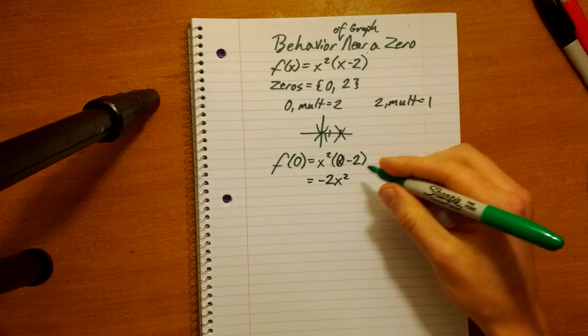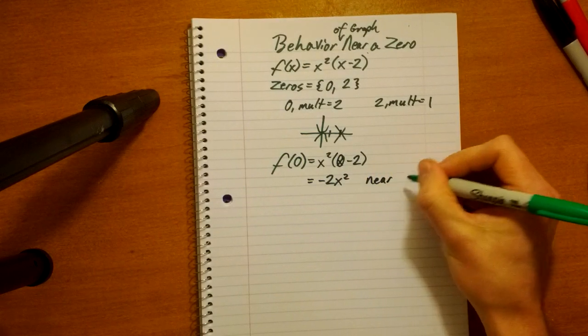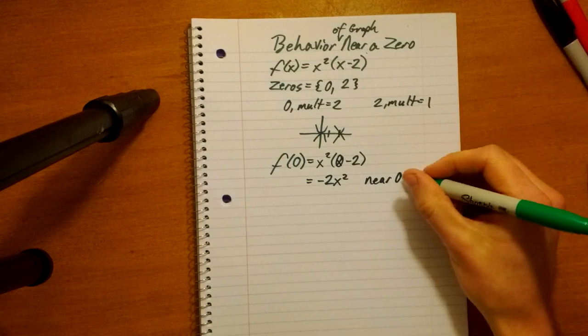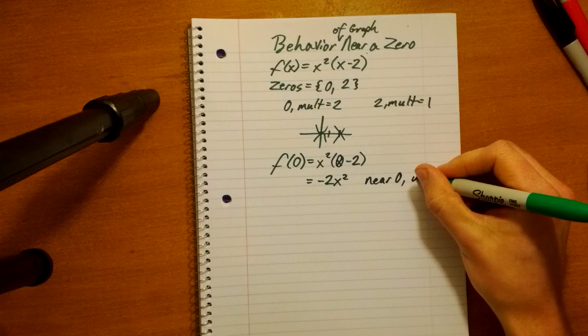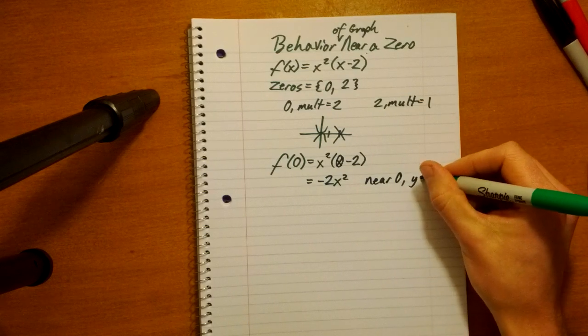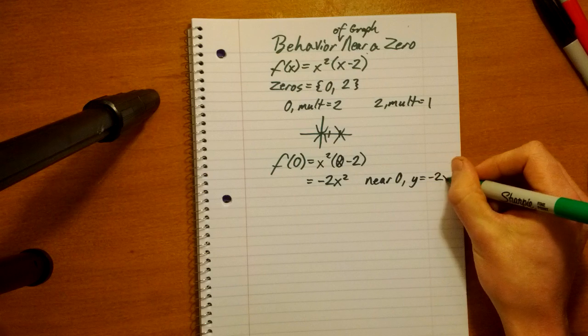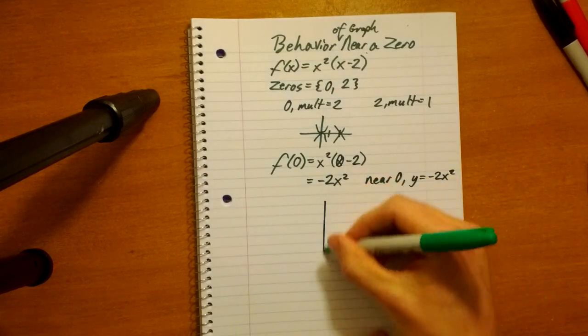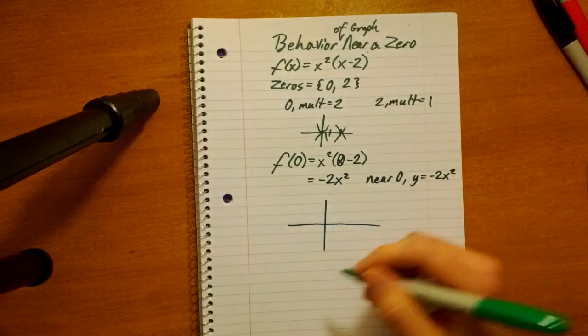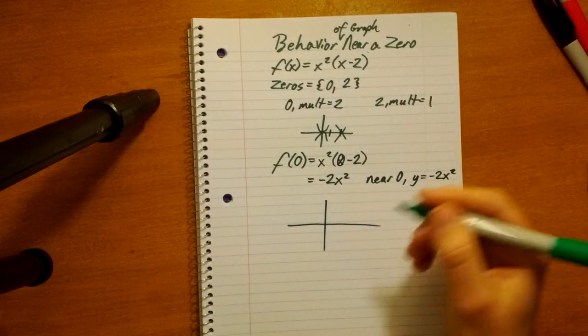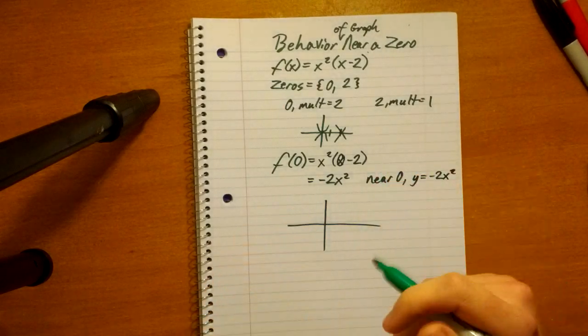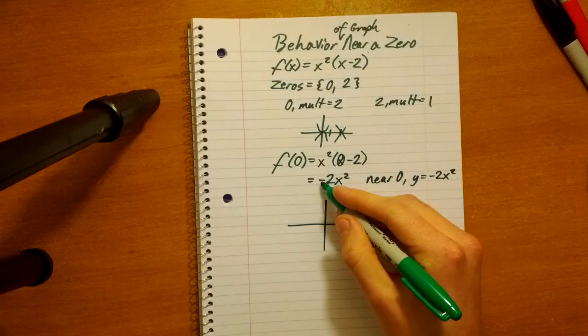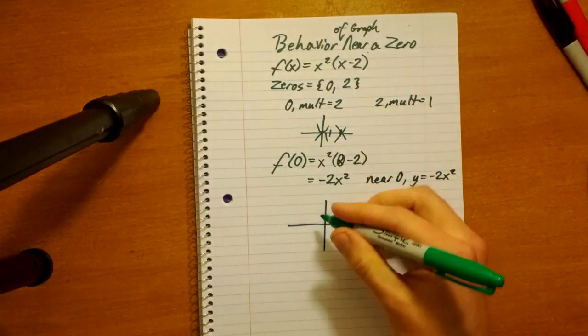So, what this tells us is that near zero, near the zero, zero, or x-intercept zero, the graph behaves like y equals negative 2x squared. So, let's have our little graph here. This tells us that it opens downward, which is great, because we didn't know that before. And because we know it's a negative 2x squared, it's going to be stretched.